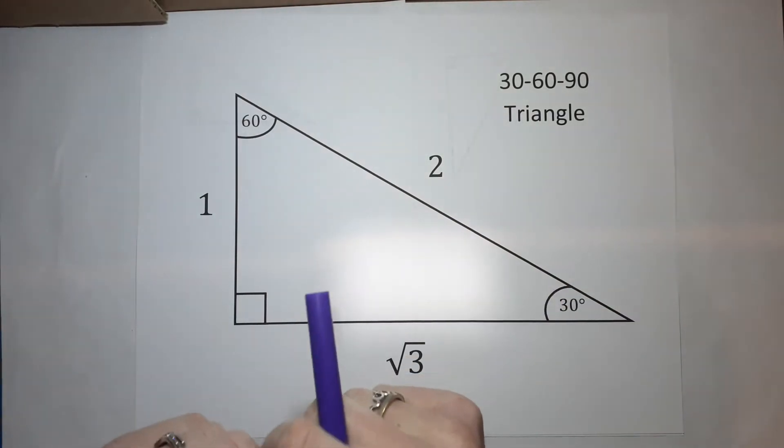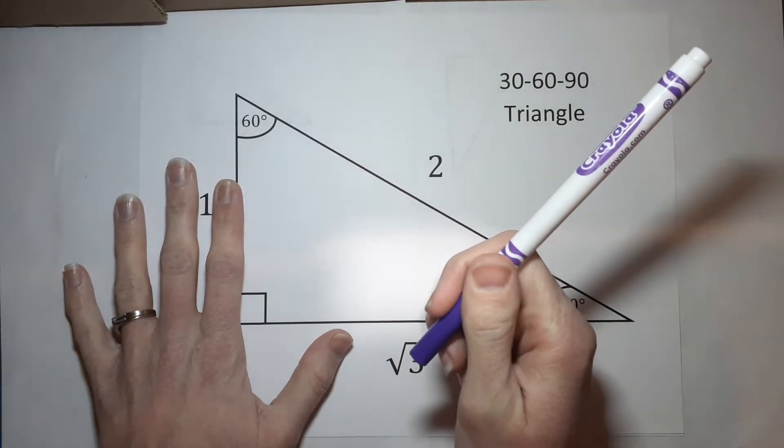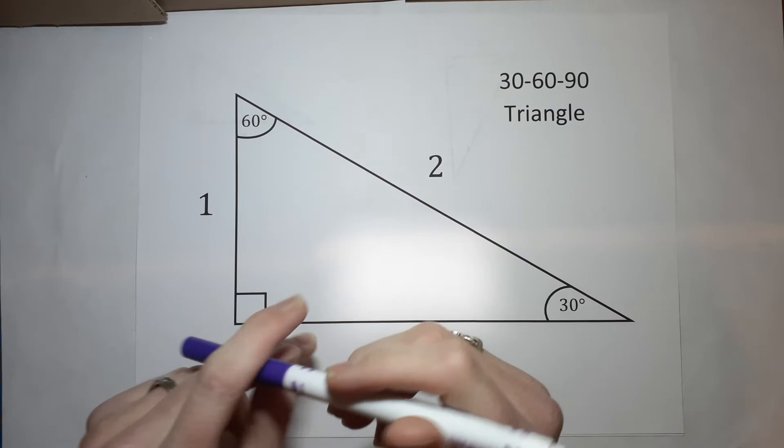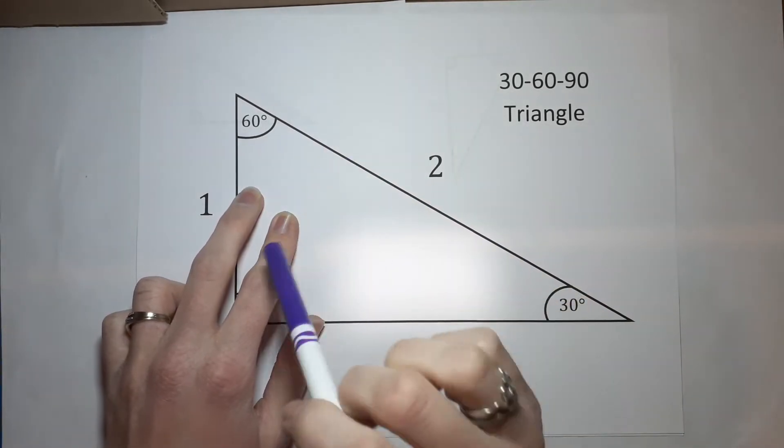If you need a quicker overview, I'm going to be pretty detailed in this video. I've got a video linked over there where I talk about 45, 45, 90 triangles and 30, 60, 90 triangles in the same video pretty quickly.